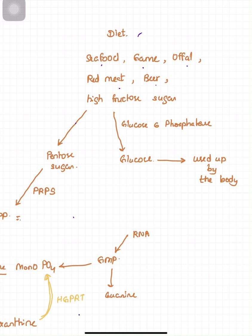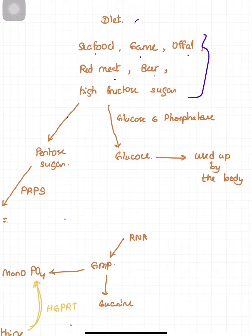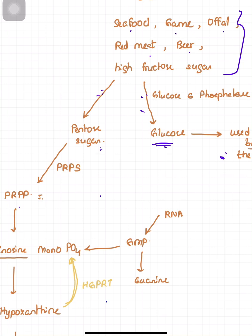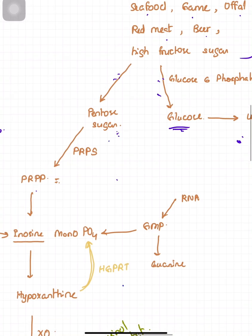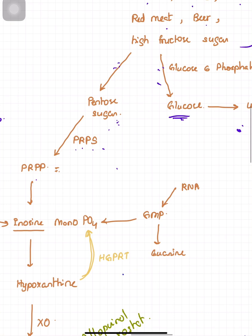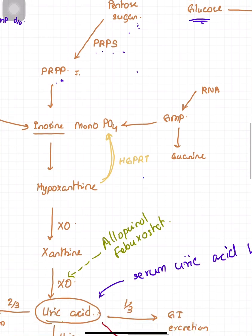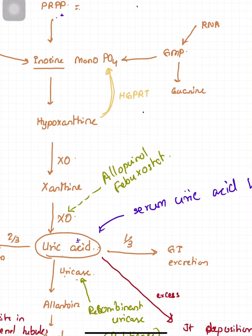When you eat these diets, they can go down into two pathways. The first is via glucose-6-phosphatase, which breaks down and transforms these compounds into glucose to be used by the body. The second pathway changes them into pentose sugar, and through the PRPS enzyme it becomes PRPP, which will finally lead to the formation of uric acid.